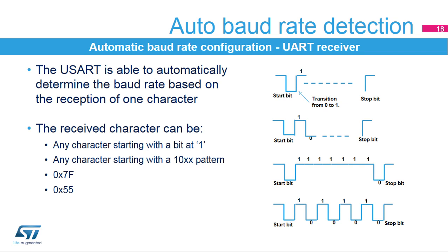A 0x7F character frame: in this case the baud rate is updated first at the end of the start bit, then at the end of bit 6. Or a 0x55 character frame: in this case the baud rate is updated first at the end of the start bit, then at the end of bit 0, and finally at the end of bit 6. In parallel, another check is performed for each intermediate transition of the RX line.